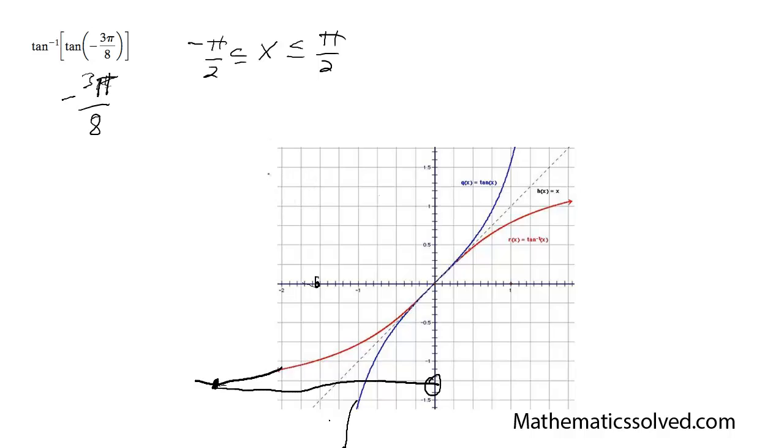Which pi over 2 is equal to 1.717. So that sounds about right. So that justifies graphically why it's negative 3 pi over 8. So that's it.